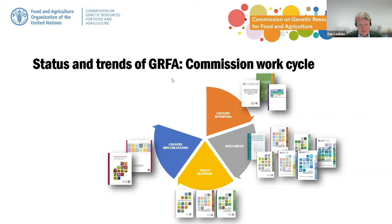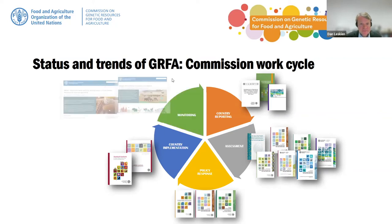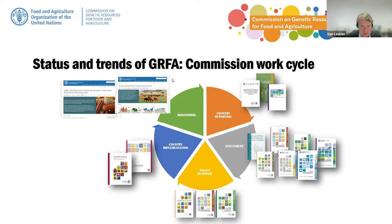FAO also assists through technical guidelines and standards that countries may use in implementation. For example, FAO adopted gene bank standards that help gene bank managers conserve plant genetic resources, and guidelines for the conservation and sustainable use of farmers' varieties and landraces. Countries have also agreed to monitor the implementation of policy responses and action plans and report back to the commission. For animal and plant genetic resources, the commission has established an online reporting tool, and for aquatic and forestry resources, online reporting tools are currently under development. Monitoring results feed into country reports, which form the basis for the next global assessment — completing the commission's work cycle.